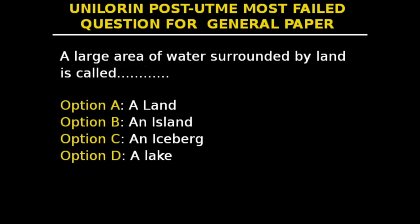Hello guys, this is question 33 in our series, and it says: a large area of water surrounded by land is called — option A, a land; option B, an island; option C, an iceberg; and option D, a lake.